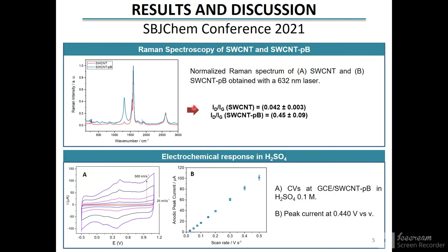The chemical modification of the nanotubes was confirmed by infrared and Raman spectroscopy, evaluating the ratio between the intensities of the D and G bands. The figure shows in red the Raman spectra before and in blue after the chemical functionalization. The values of the ratio obtained indicate an increase in the density of defects due to the chemical functionalization.